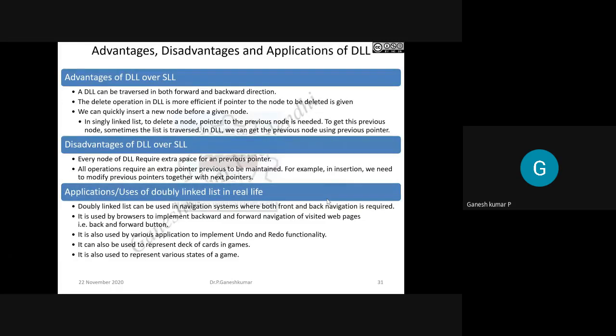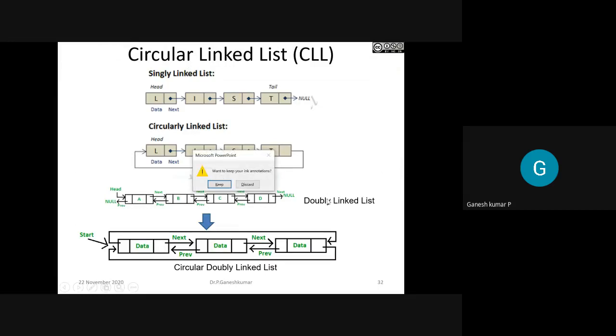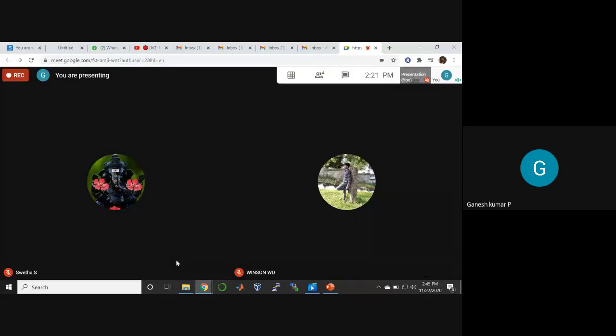Comparing SLL and DLL, DLL has enormous advantages: it can be traversed in both forward and backward directions, and deletion is more efficient. The only drawback is it needs extra space due to more pointers. DLL is used in many real-life applications — for example, browser next and previous buttons, redo and undo operations, online games, and managing a deck of cards. Circular linked list will be discussed in the next session.